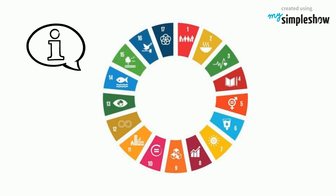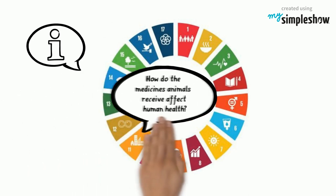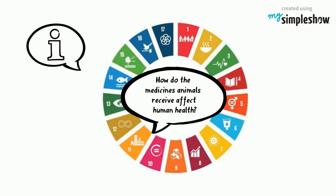Explaining the 17 Goals for 2030 Agenda for Sustainable Development. Let's explain how the medicines animals receive affect human health.